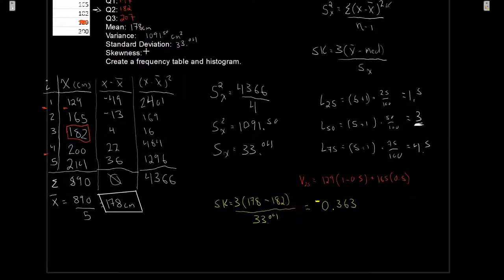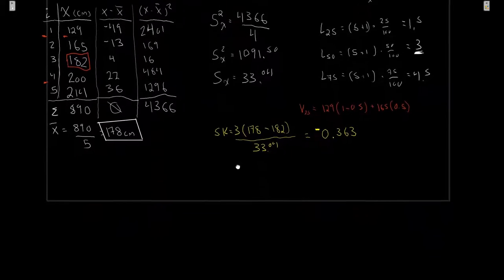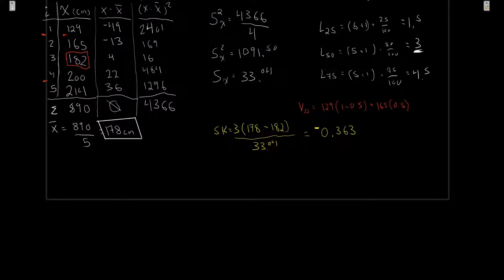We have a slight negative skew to that. It's not very much, we're still in the zero range, we're pretty close to being symmetric, we just have this little bit of skew going on there. Last thing we want to do is we want to create a frequency table and a histogram.